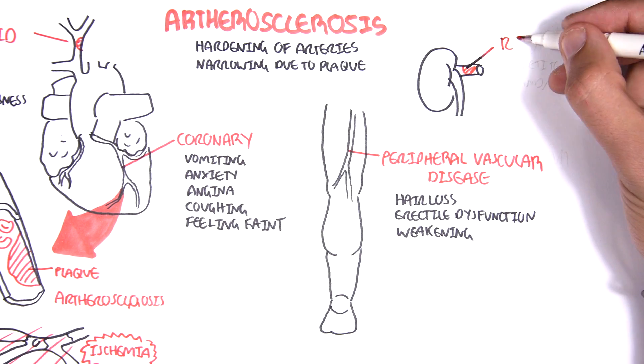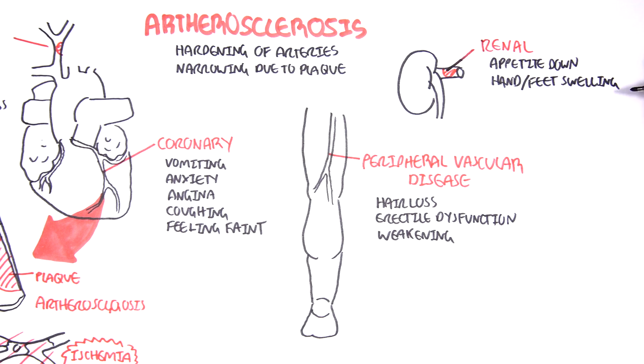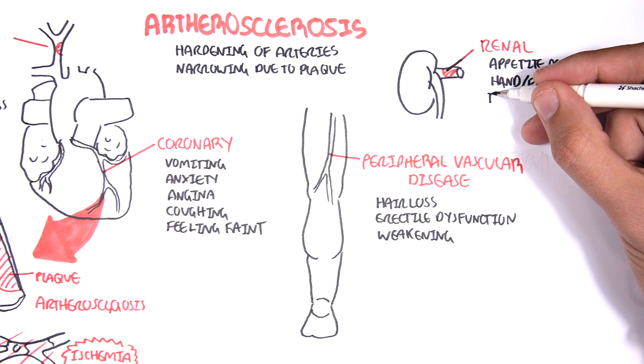Another important site where atherosclerosis can occur is the renal arteries. This can cause a reduction in appetite, swelling of the hands, and most importantly, it can trigger a renin release, which will significantly increase the blood pressure.